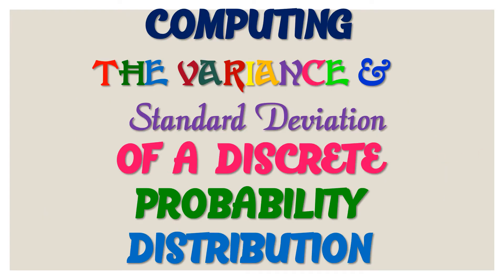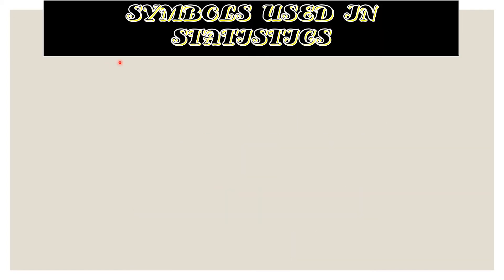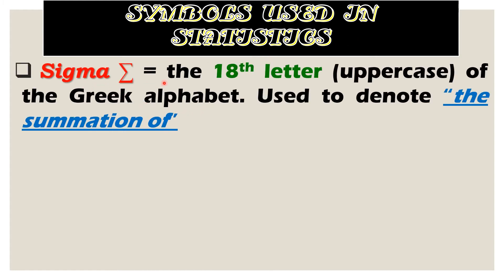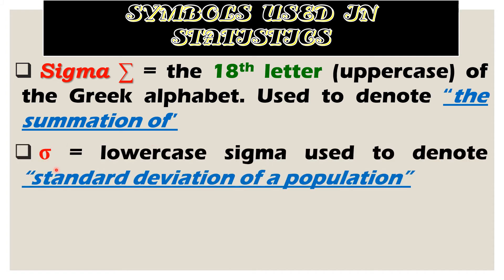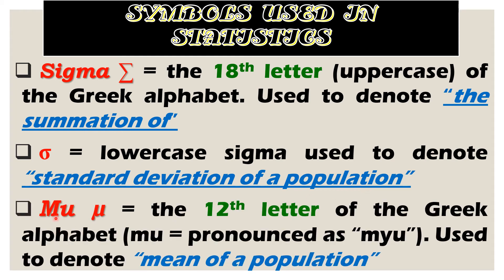Now let's proceed to computing the variance and standard deviation of a discrete probability distribution. Let's talk about the symbols used in statistics. We have sigma — the uppercase eighth letter of the Greek alphabet — used to denote summation. Next, lowercase sigma is used to denote standard deviation of a population. And mu is the twelfth letter of the Greek alphabet, pronounced as mu, used to denote the mean of a population. Please take note of these three symbols.